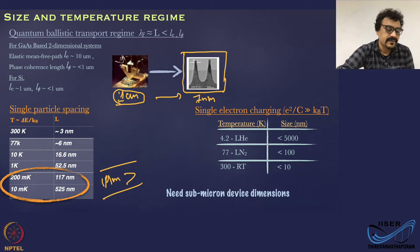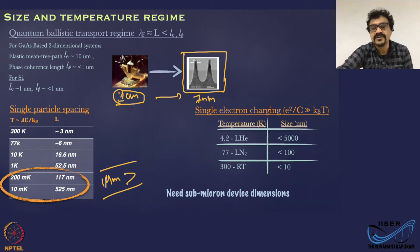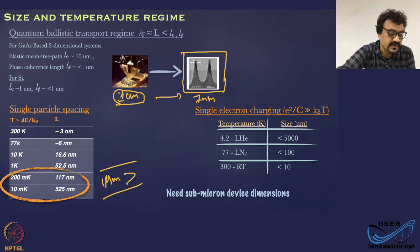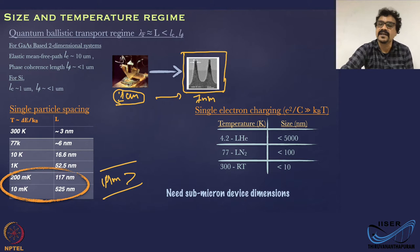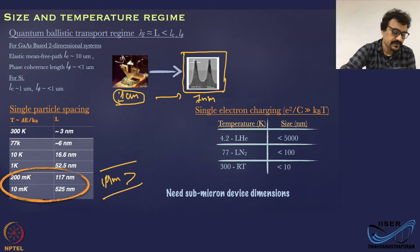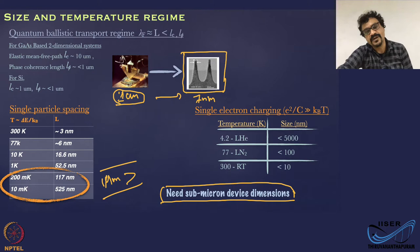There is also another aspect — the single electron charging phenomena — and these are the length scales and temperature scales required to observe this. Around liquid helium temperature, you need to go below a few micrometers, of the order of a micrometer, to observe single electron charging phenomena. Remember, this single electron charging phenomena is not strictly a quantum mechanical effect; it is a classical electrostatic charging effect, which we will discuss when we cover quantum dots and tunnel junctions in an upcoming module. In summary, we need devices with submicrometer dimensions to observe most of these phenomena.